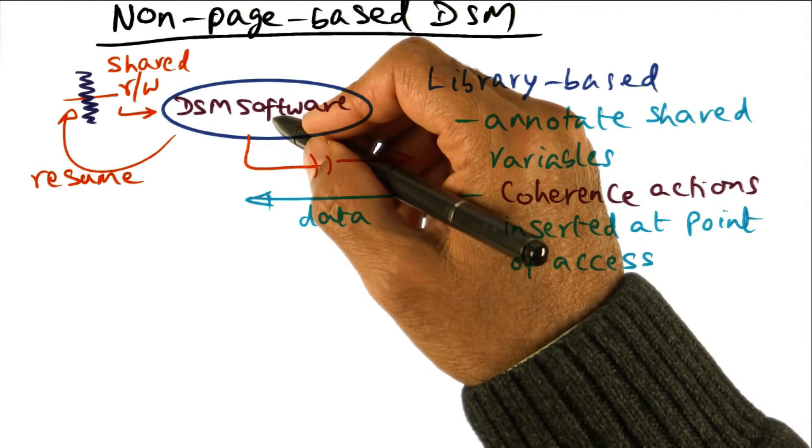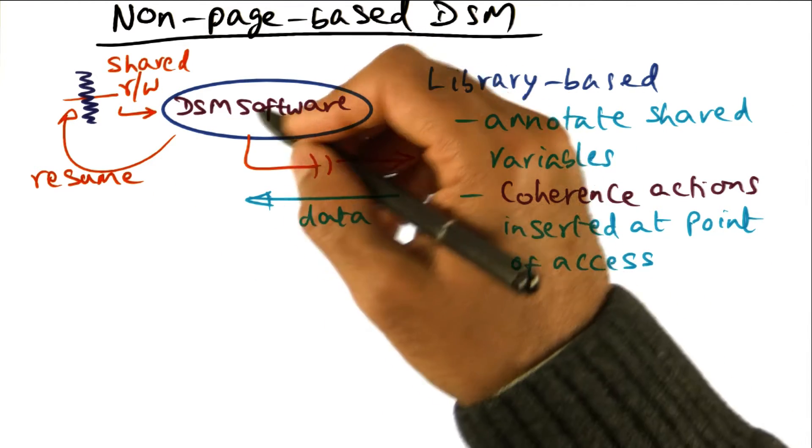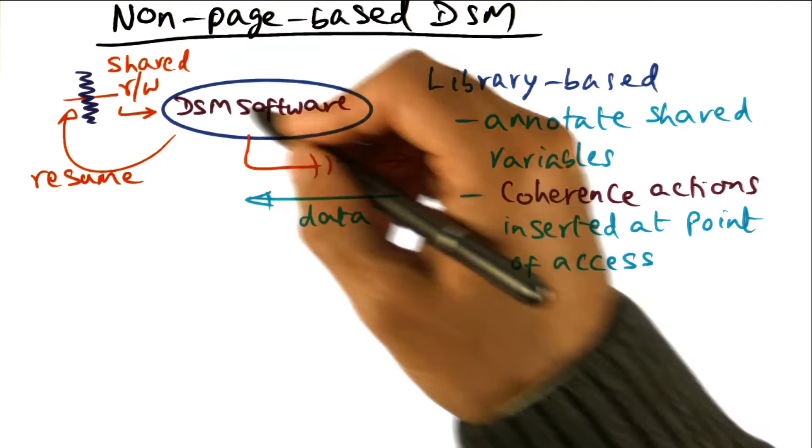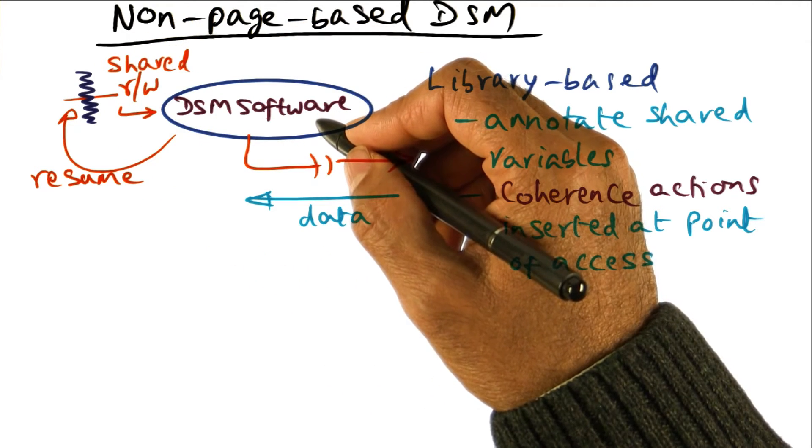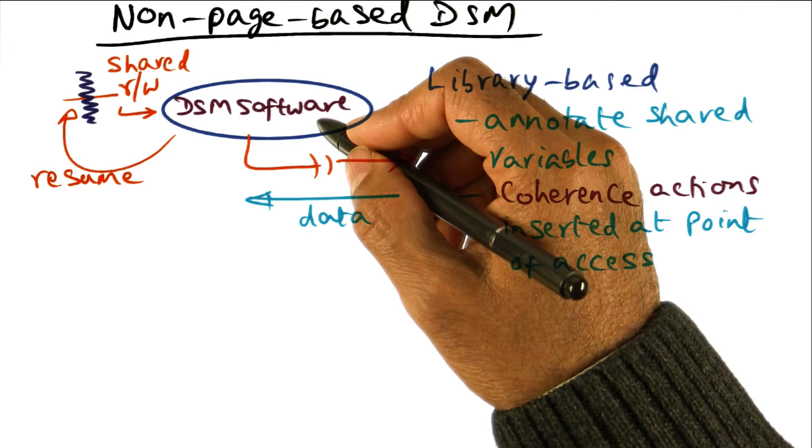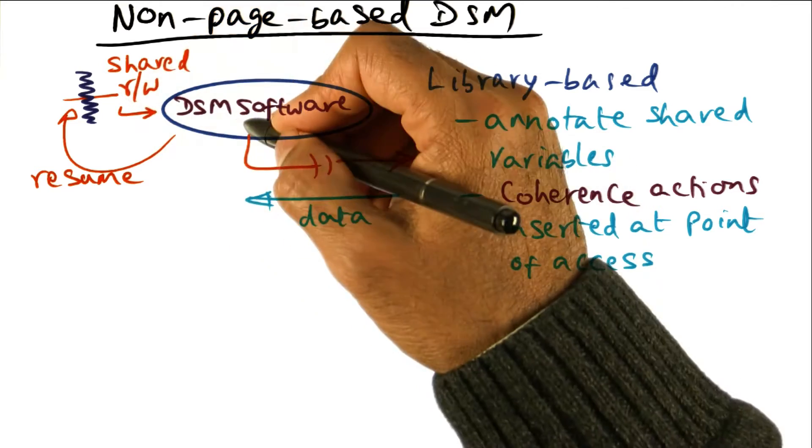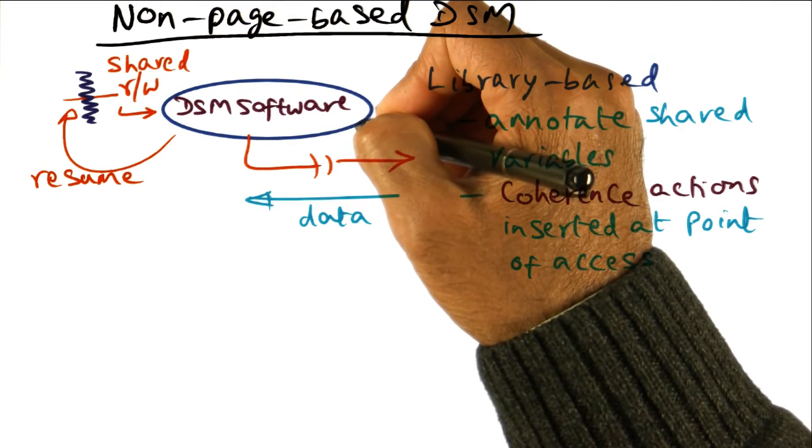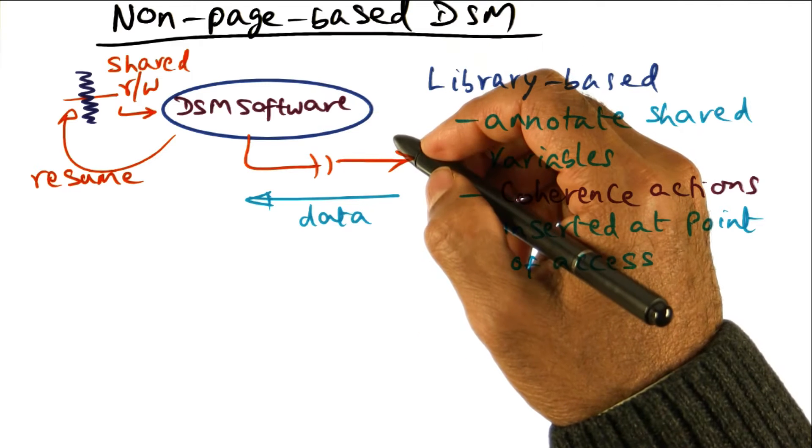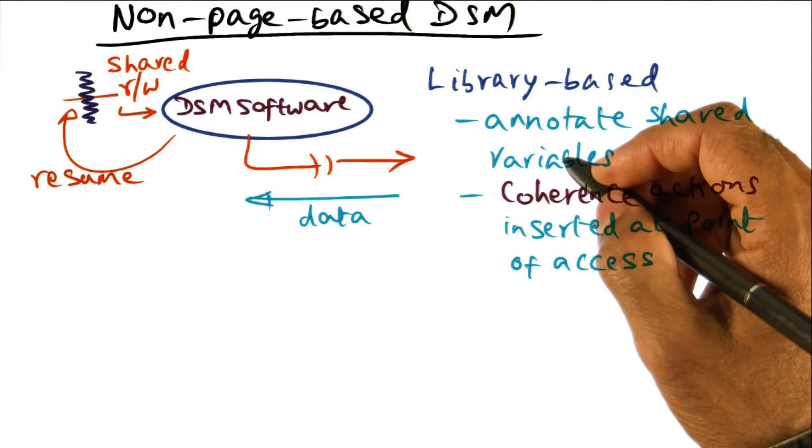So in this case, there is no operating system support needed because in the binary itself, we are making sure that at the point of access, we're going to result in a trap that will get us into the trap handler that is part of DSM software so that it can take the coherence actions.